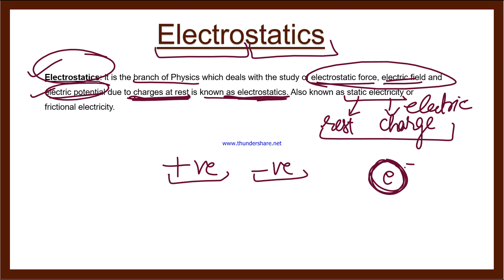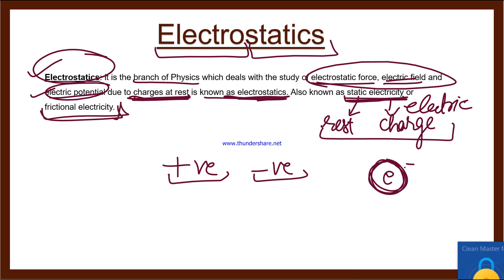One word written here is 'frictional electricity.' What is frictional electricity? Static electricity is produced by friction between two surfaces in contact, and hence it is called frictional electricity. So static electricity is produced by friction between two surfaces — for example, your chair and your clothes are two surfaces. Due to friction between these two surfaces, electrons get activated, and that is why static electricity is also called frictional electricity.